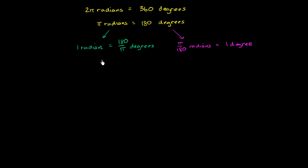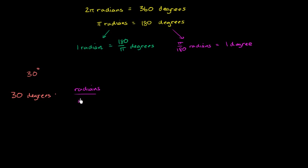Now I think we are ready to start converting. So let's convert 30 degrees to radians. This might remind you of unit analysis when you first did unit conversion, but it works here too. If I write 30 degrees, I want to convert to radians, so I need to figure out how many radians there are per degree. With degrees times radians per degree, the degrees cancel out and I'm left with radians.